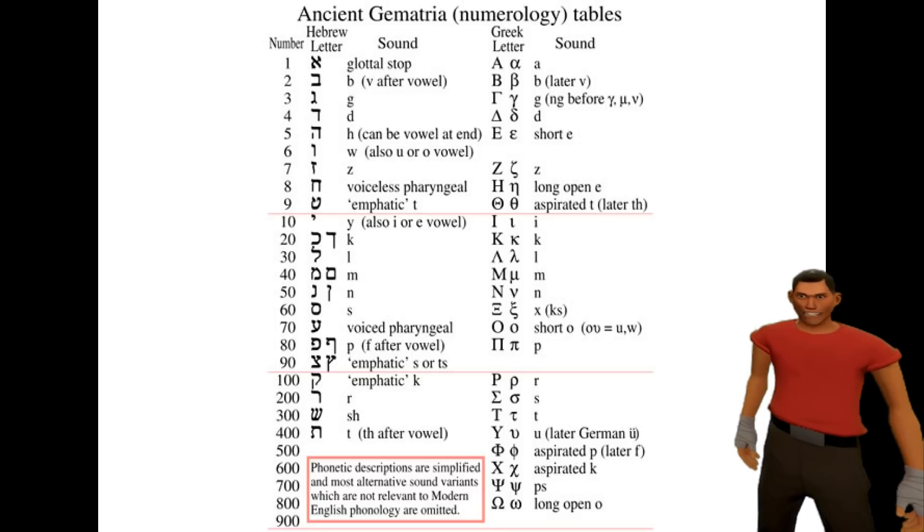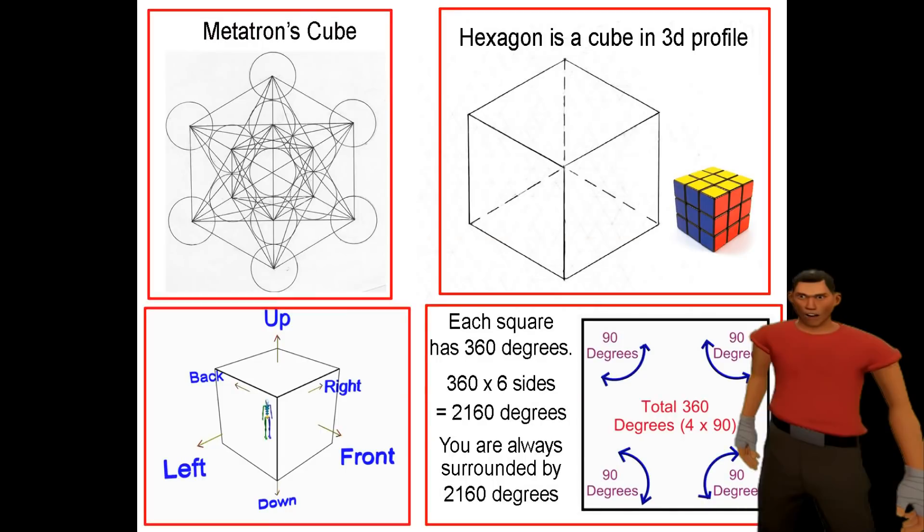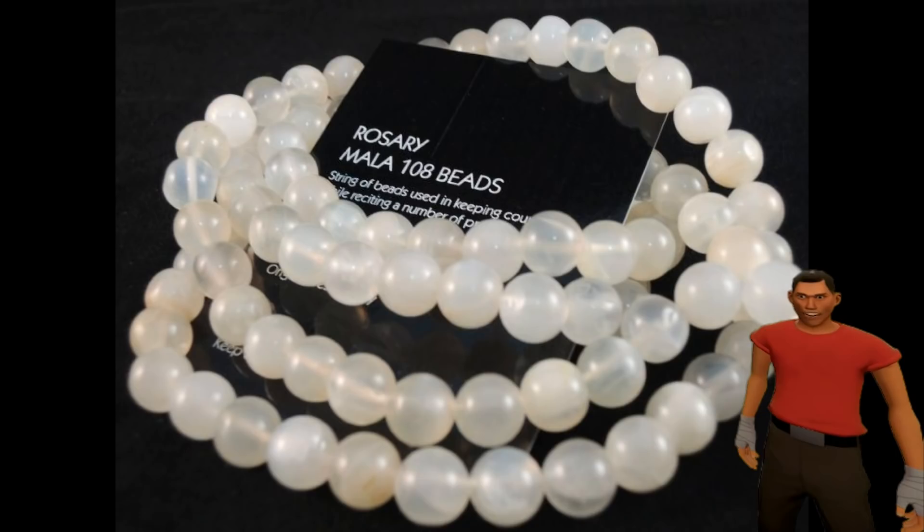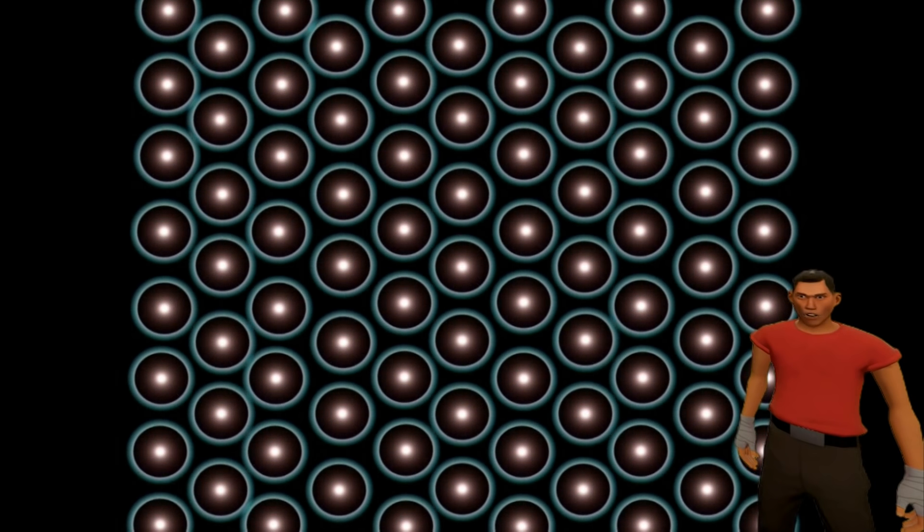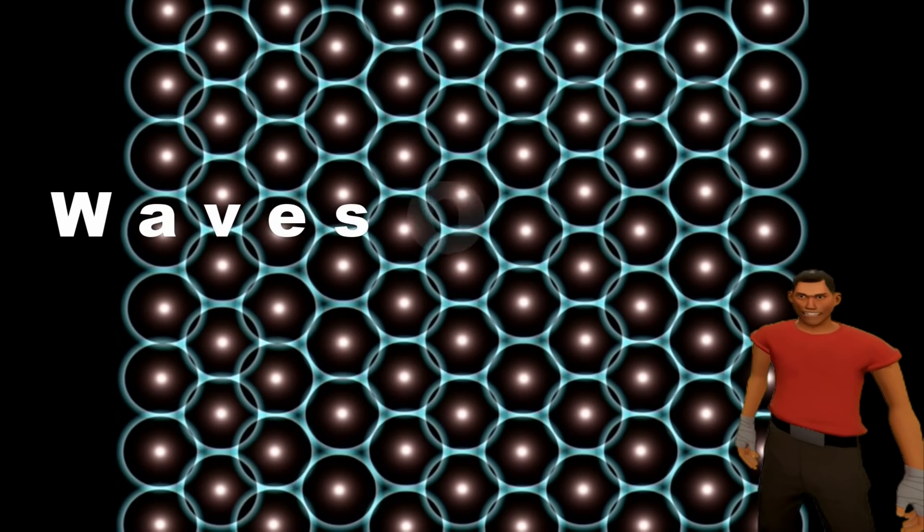I cannot spoon feed all of this information to you. You need to open your eyes and do some research. All the information is freely and readily available. Go and find out who Metatron is and where all these sacred numbers appear. I myself have done numerous videos on this subject.